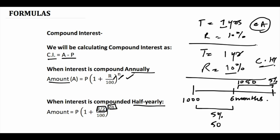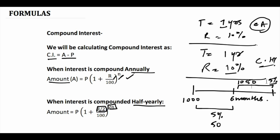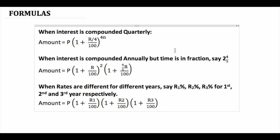This is why we multiply the time period by two when it is compounded half yearly and divide the rate of interest by two. If it is compounded quarterly we follow a different approach. I hope this is clear. Next, when it is compounded quarterly — quarterly means three months — there are four quarters in a year.